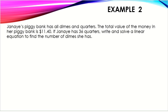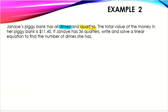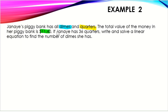Let's take a look at example two. It says: Janae's piggy bank has eleven dimes and quarters. So we have our two objects — dimes and quarters. The total value of the money in her piggy bank is $11.40. If Janae has 36 quarters, write and solve a linear equation to find the number of dimes she has. Let's go ahead and define our variables.